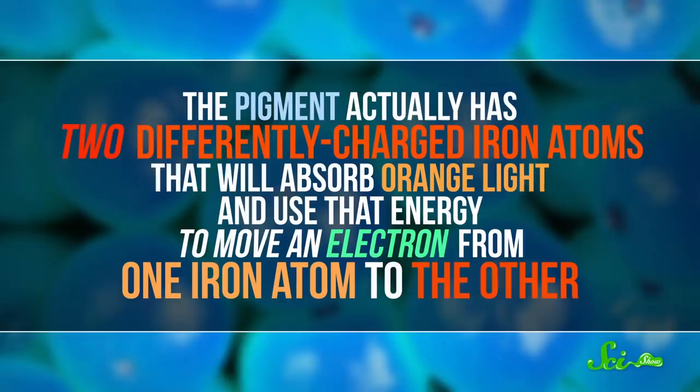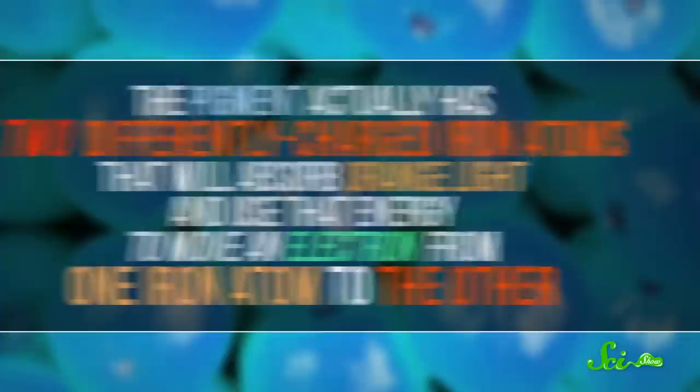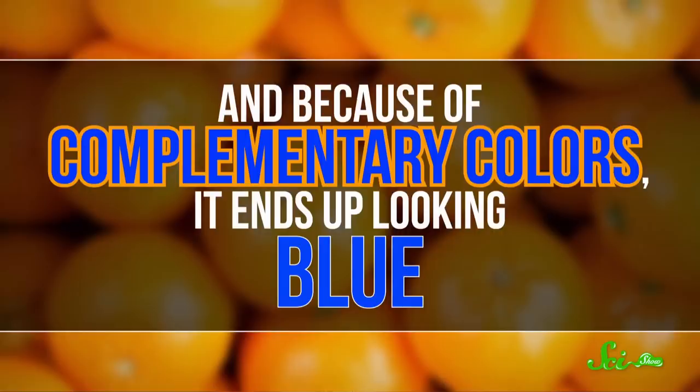There are different reasons why a pigment might reflect or absorb certain wavelengths. With Prussian blue, it's because of iron and something called charge transfer. The pigment actually has two differently charged iron atoms that will absorb orange light and use that energy to move an electron from one iron atom to the other. And because of complementary colors, it ends up looking blue.